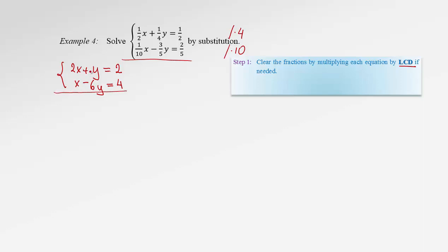What do we do now? Remember, substitution works by solving one of the equations for one of the variables, whichever we like, and then substituting the resulting expression into the other equation. This time I will solve the second equation for x. From the second equation we get x equals — bring the negative 6y to the other side — it becomes positive 6y plus 4.